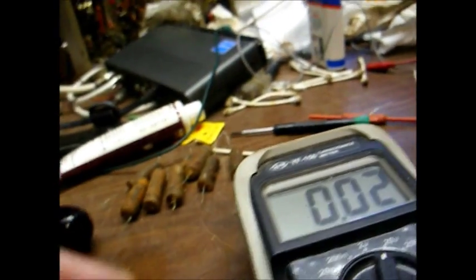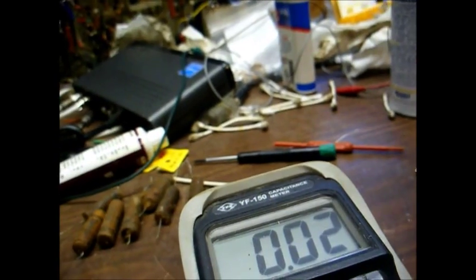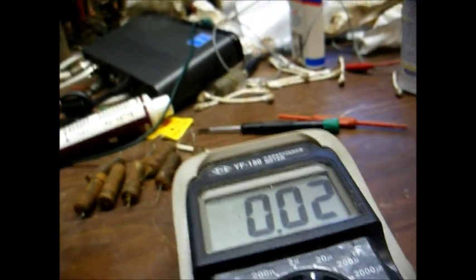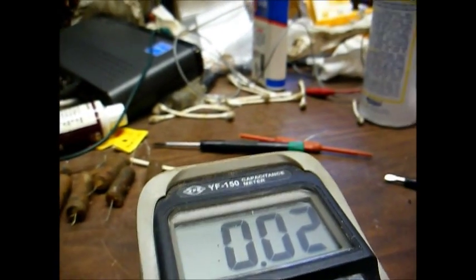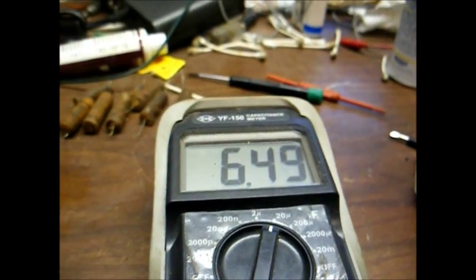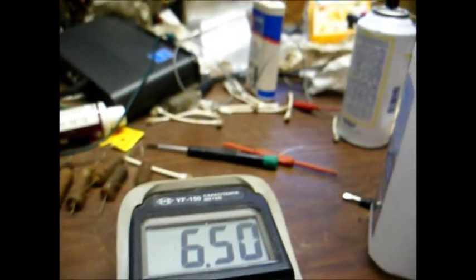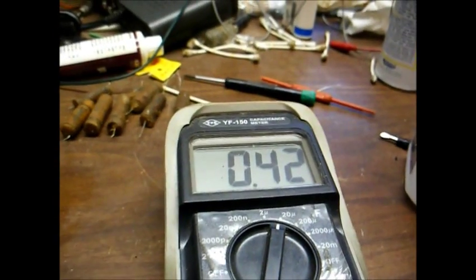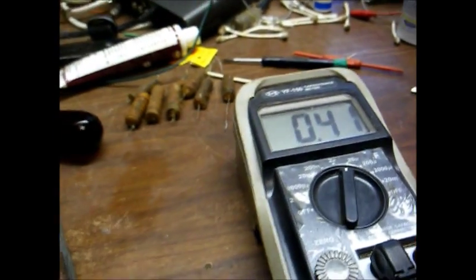And testing the multi-section electrolytic. This was originally a 40 microfarad, 40 microfarad, 20 microfarad cap. Okay, one section's reading 0.02 microfarad. So that's a far cry from what it's supposed to be. Section two is reading about 6.5 microfarad. And section three is reading 0.04 microfarad. So yeah, this cap's a goner too.